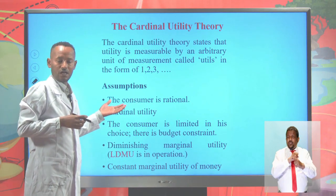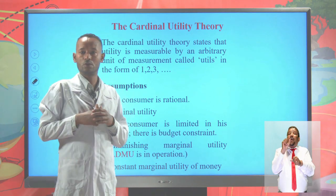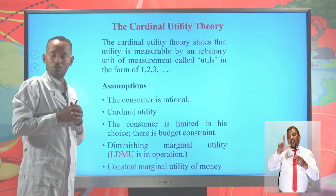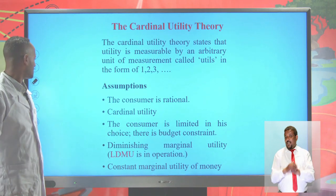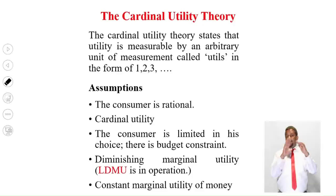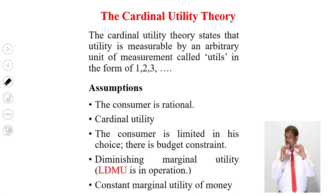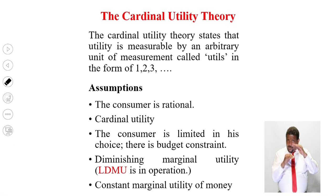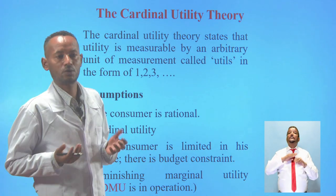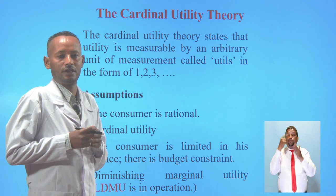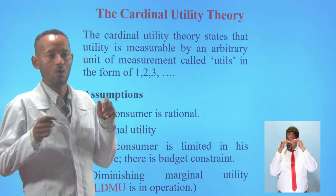The second assumption is cardinal utility — it is possible to attach numbers to the satisfaction derived from consumption of goods and services. The third assumption is the consumer is limited in choice: there is a budget constraint, meaning everybody cannot buy whatever they want. The fourth assumption is diminishing marginal utility — the law of diminishing marginal utility is in operation, meaning the additional satisfaction from additional consumption of a commodity will always decline.